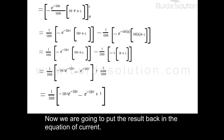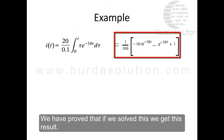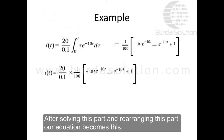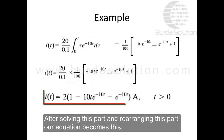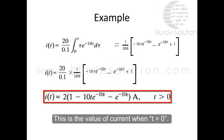Now we put this result back into the equation for current. We have proved that solving this integral gives us the result, so we replace that part accordingly. After substituting and rearranging, the coefficient becomes 2 and the expression is simplified. This is the final value of current when t > 0.